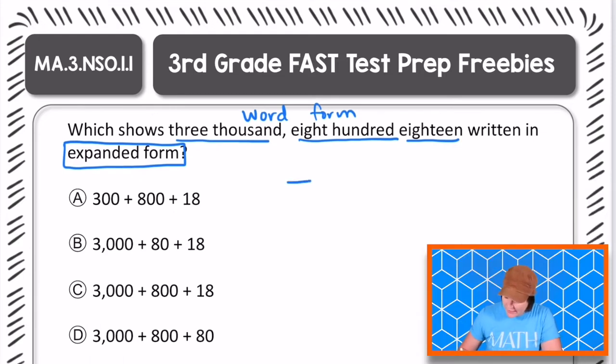So that means that we need a thousands place. And then we need 818. Okay, so we have 3,800.